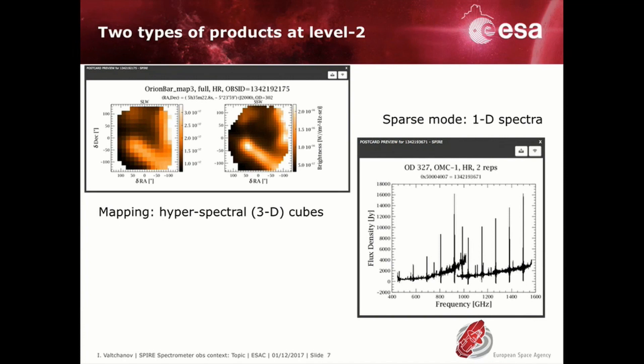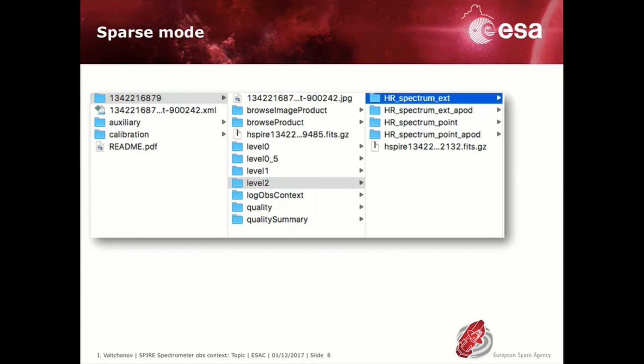The two modes can be easily distinguished by the postcard image, an image for mapping and a spectrum for sparse mode. The products from the archive are packed in a tar archive file. Unpacking the tar file will create a folder structure with the observational context hierarchy.